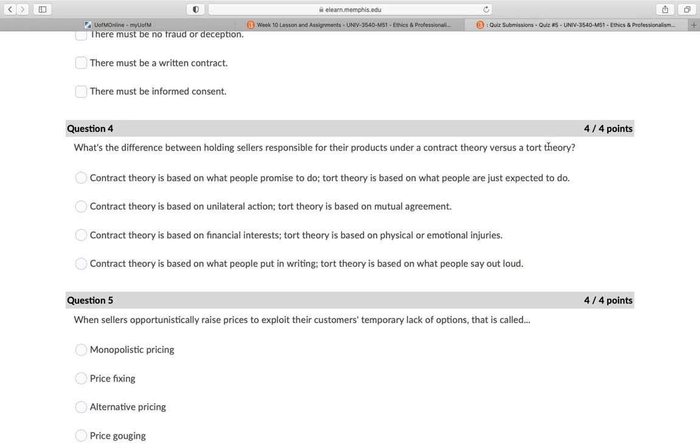The answer that I chose was contract theory is based on what people promise to do, and tort theory is based on what people are just expected to do. Where I got that answer from was in the book on chapter 8. I do have the 6th edition, and I found my answer on page 175 under the subheading negligence.